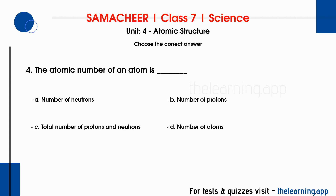Question 4: The atomic number of an atom is dash. Options are: A. Number of neutrons, B. Number of protons, C. Total number of protons and neutrons, D. Number of atoms. Correct answer is B. Number of protons.